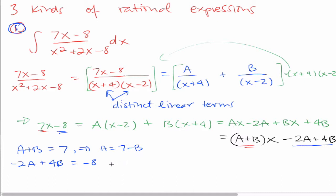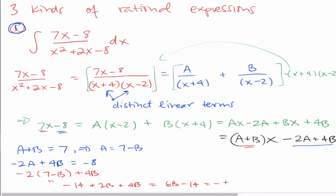This tells me that a is 7 minus b, so I substitute it in: negative 2 times 7 minus b plus 4b has to equal negative 8. That equals negative 14 plus 2b plus 4b, which is 6b minus 14. This has to equal negative 8, so 6b equals 6, meaning b is equal to 1. Then going back, a plus b equals 7, so a must equal 6.